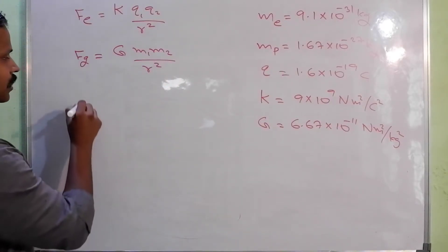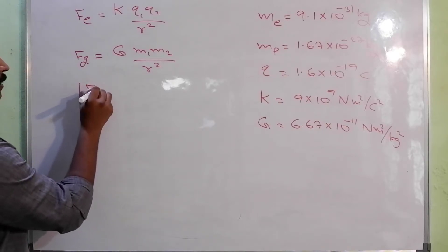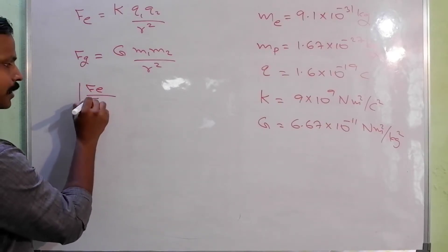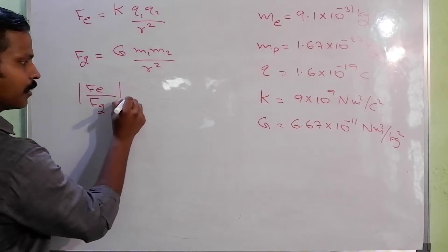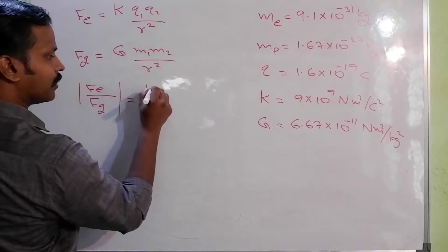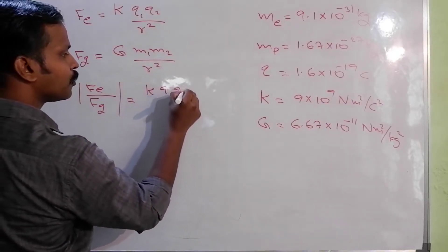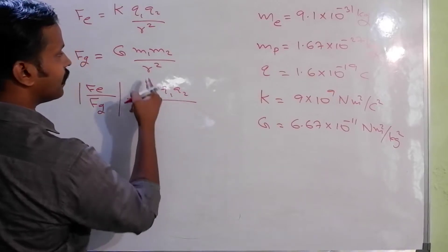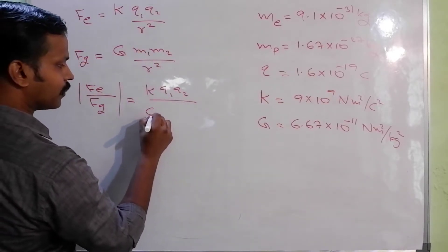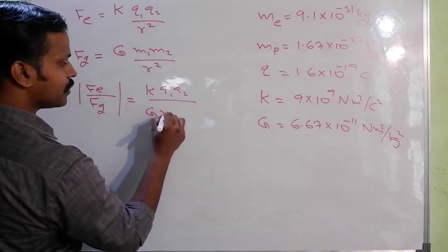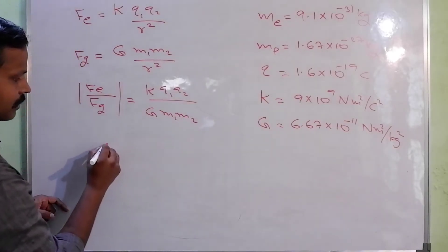We need the ratio. F_e by F_G is equal to K into Q1, Q2 by r square, divided by G into M1, M2 by r square. Let's substitute.